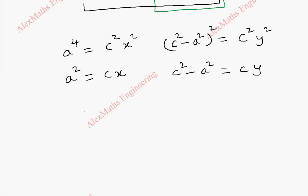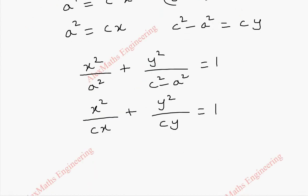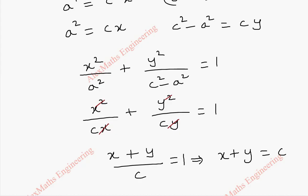Coming to the substitution, we already have x² / a² + y² / (c² - a²) = 1. Replacing a² with cx and (c² - a²) with cy gives x² / cx + y² / cy = 1. After cancelling, we get x/c + y/c = 1, which simplifies to x + y = c. This is the required equation of the envelope.